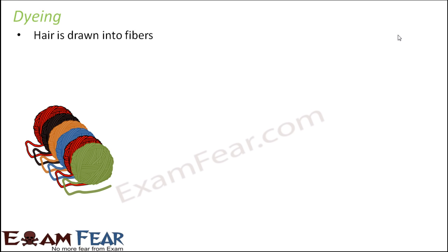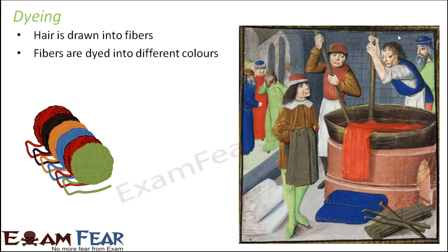The hairs are drawn into fibers — this is when you actually get the wool fibers. All the hairs, free of burrs, dirt, dust, and grease, are stretched to form thin fiber-like structures. They are then dyed into many different colors. As you can see, the woolen fibers have been dyed into red, blue, gray, and many other colors, so they can be used for making colorful woolen wear.